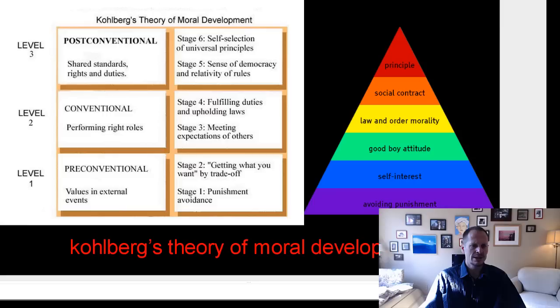Let's look at what some slides say about Kohlberg's Theory of Moral Development. Down here: punishment avoidance or getting what you want, self-interest — like a trade-off — and meeting the expectations of others. Like, I'm doing this because of how people think of me. These are all 'what's in it for me' kinds of ways of thinking.